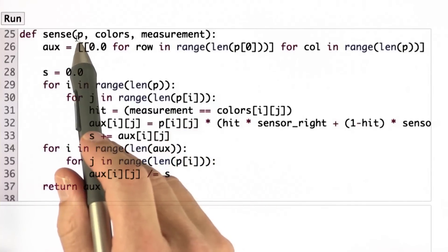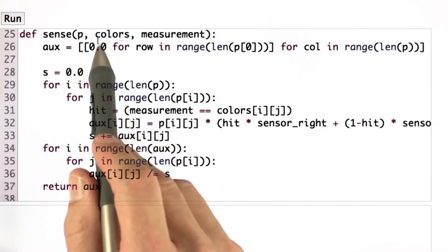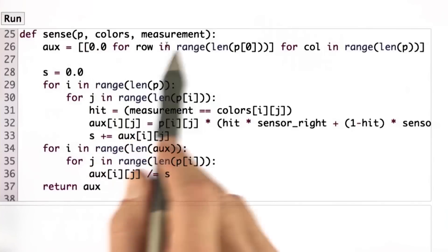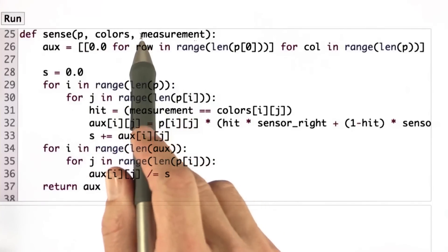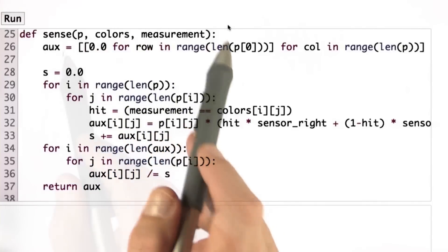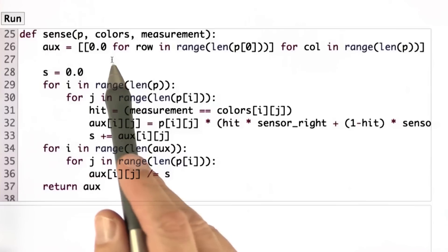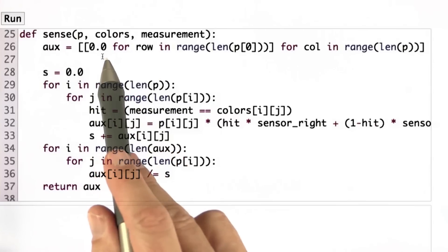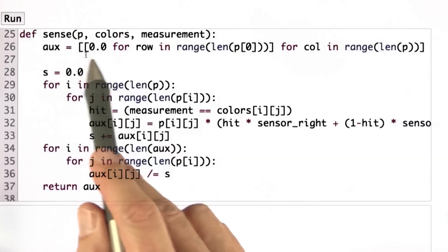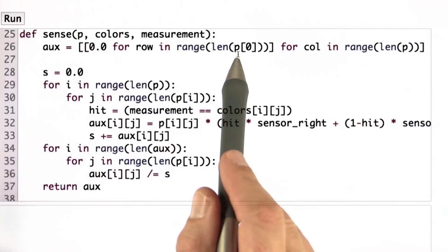It goes from here to down here. As an input, I have a probability distribution and my world map. They're both of the same size. And a specific measurement, which is either red or green. I construct inside my new posterior distribution. I initialize this with zeros. And it's of the same size as my vector p.